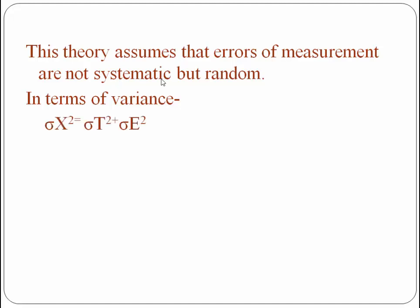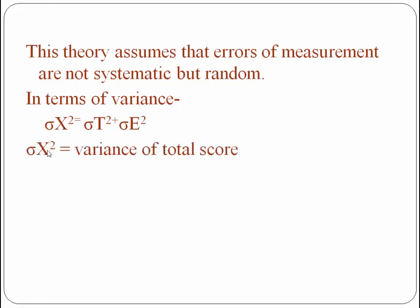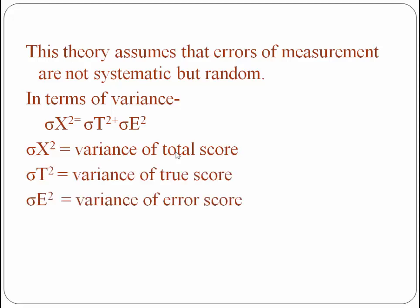In terms of variance, we can say: variance of total score is equal to variance of true score plus variance of error score. Here, sigma X squared is the variance of total score, sigma T squared is the variance of true score, and sigma E squared is the variance of error score.